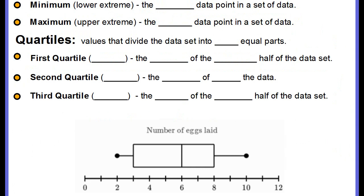Okay, these are the five components of a box plot. As we're going through, make sure you fill in your notes. You will also need to label the box plot example at the bottom.